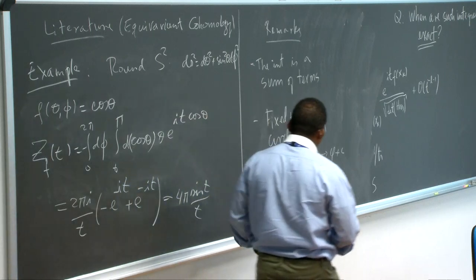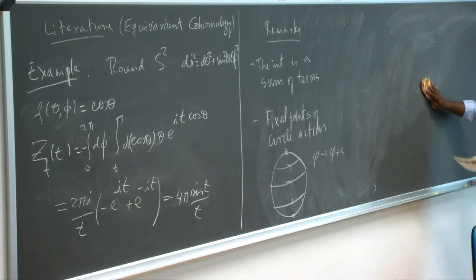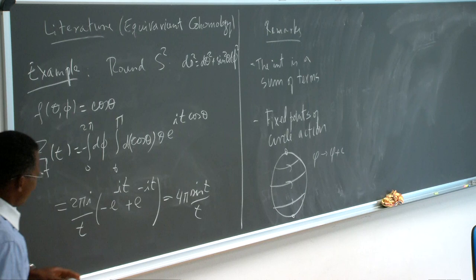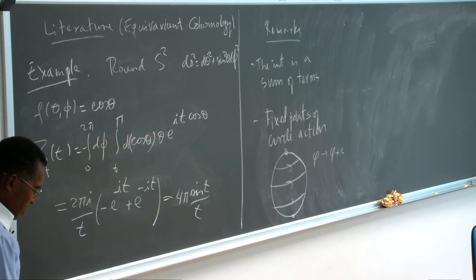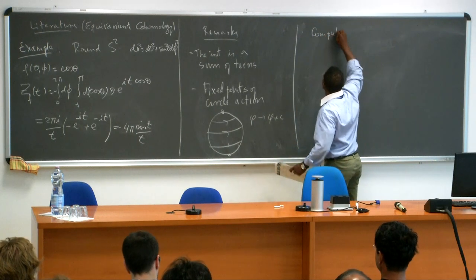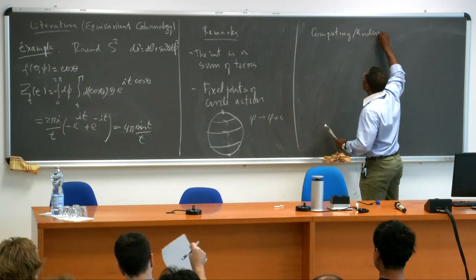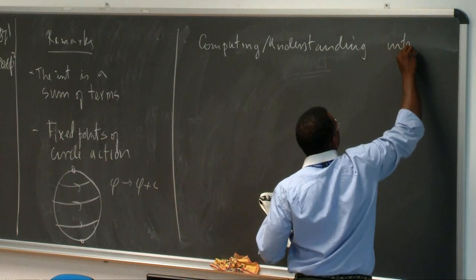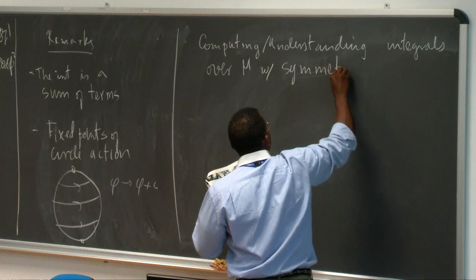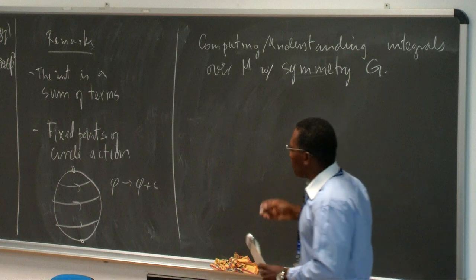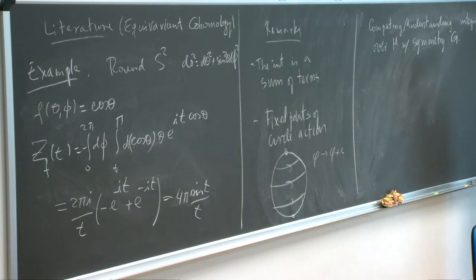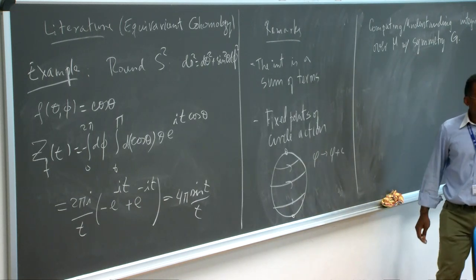A question: is the key in the denominator the Hessian? Yes, in this case it is the Hessian — I evaluated at the two points, minus one and one. So what is the problem with this kind of integral? My question again is about computing or understanding integrals over M with some symmetry, some symmetry group G.